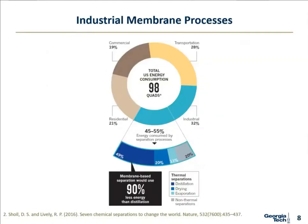Looking at motivation for industrial membrane processes, this figure shows total energy consumption for the U.S. Half of industrial energy is spent on separating fine chemicals, and another half of that is based on very thermally energy-intensive distillation columns. Membranes could save about 90% of that, cutting almost 7.5% of U.S. energy consumption — with similar impact globally.